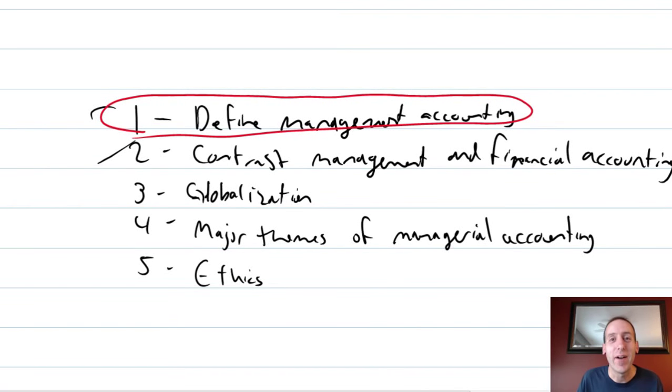In our previous video, we defined management accounting and explained it. We said it was a system that provides managers of a company information to make decisions for the company. And we also explained it by contrasting it with financial accounting. We said the big difference is the users.